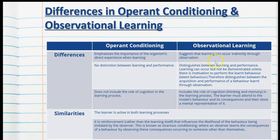Observational learning distinguishes between learning and performance, so learning can occur but not be demonstrated unless there is motivation to perform the learnt behaviour. Therefore, it distinguishes between the acquisition and performance of a behaviour learnt through observation. It includes the role of cognition — in other words, thinking and memory in the learning process. The learner must attend to the model's behaviour and its consequences and then store a mental representation of it.